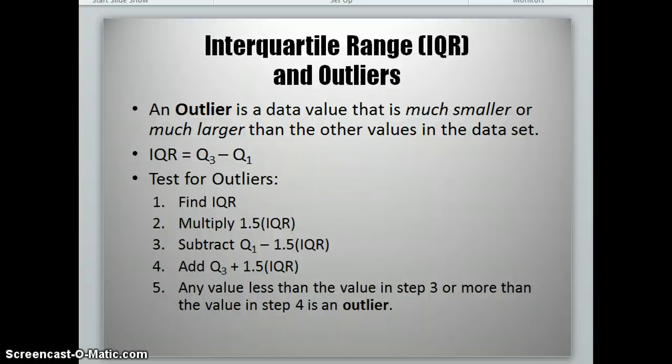So our first step will be to find the IQR. Then we're going to multiply the IQR by 1.5, subtract this value from Q1, add this value to Q3. Then what that does is it gives us an interval. Any value that is less than what we found in step 3, or more than what we found in step 4, is considered an outlier. Let's take a look at the data set we had to see if 50 really is an outlier.